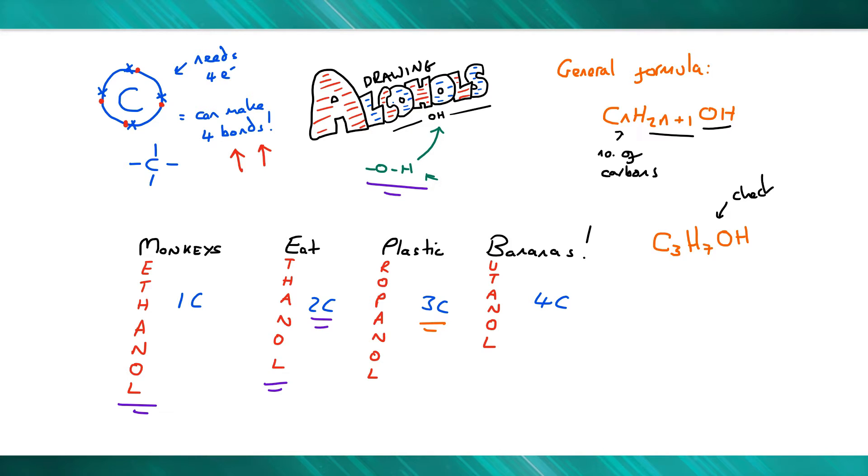We can always check that by drawing it. I've got three carbons. Every carbon forms four bonds. I add an OH on the end and fill the rest with hydrogens, which gives the formula—you guessed it—C3H7OH.